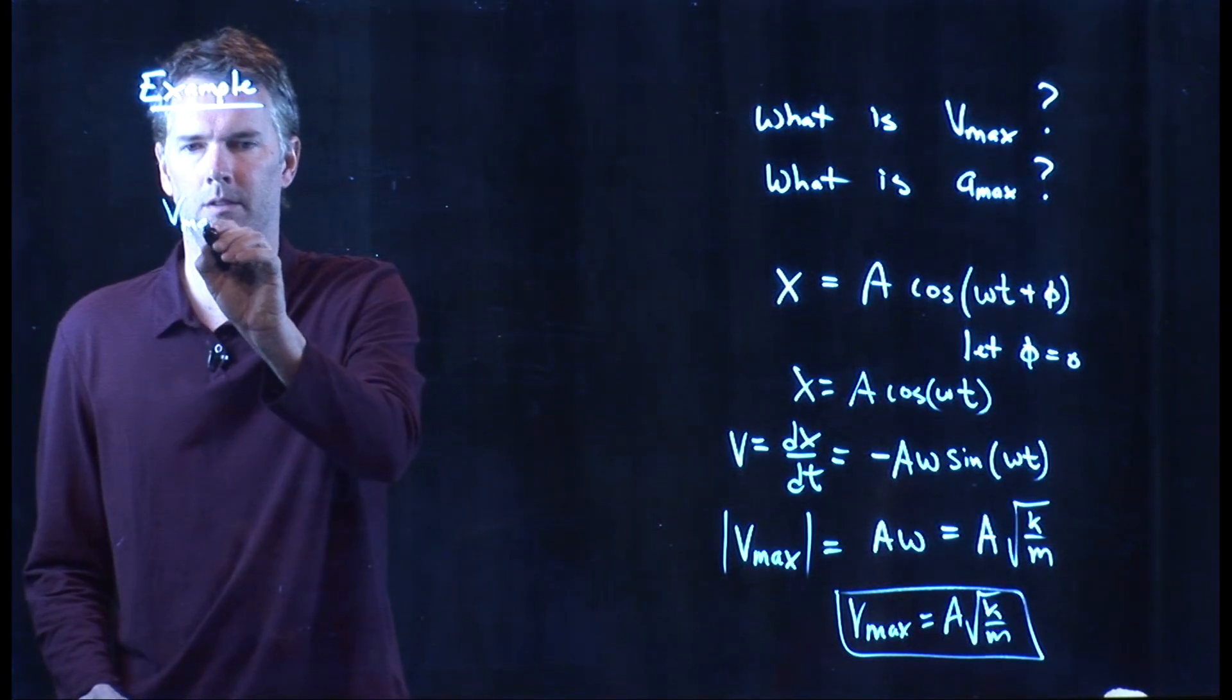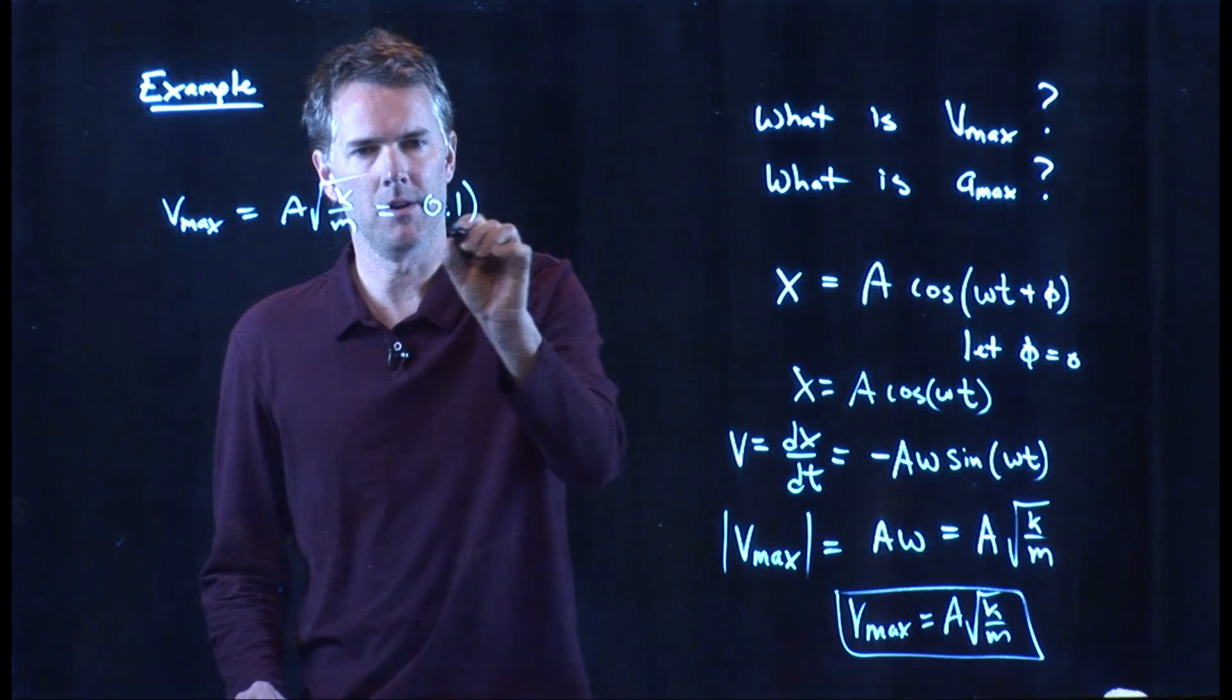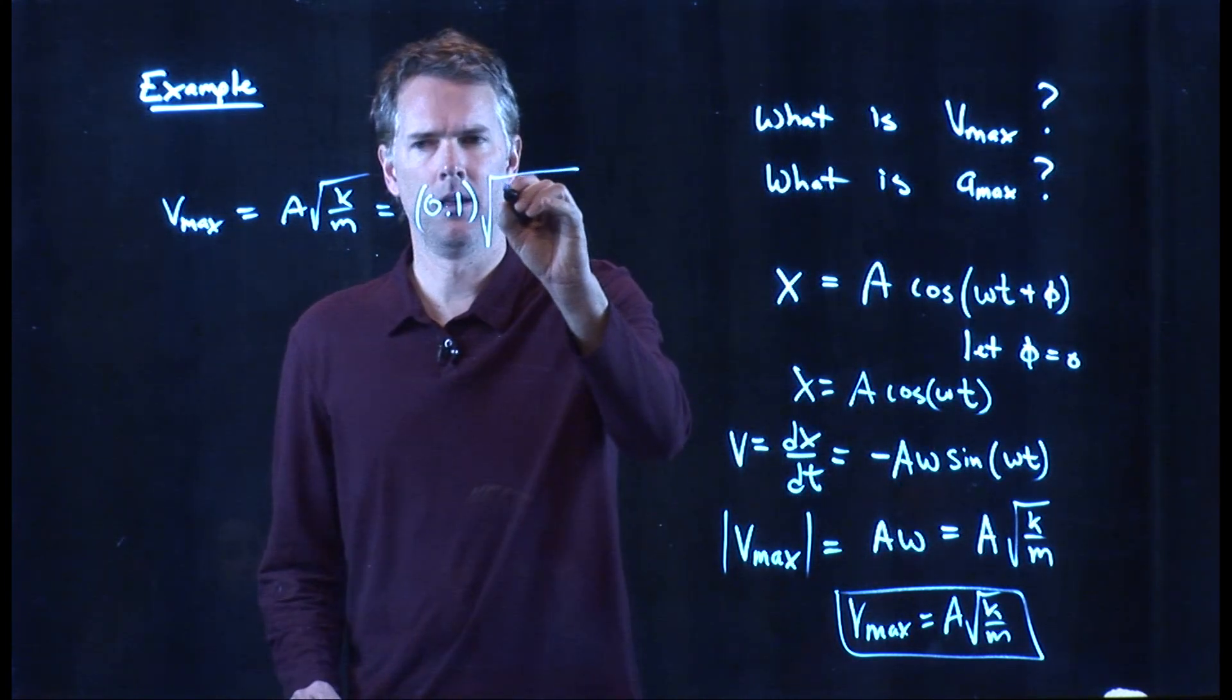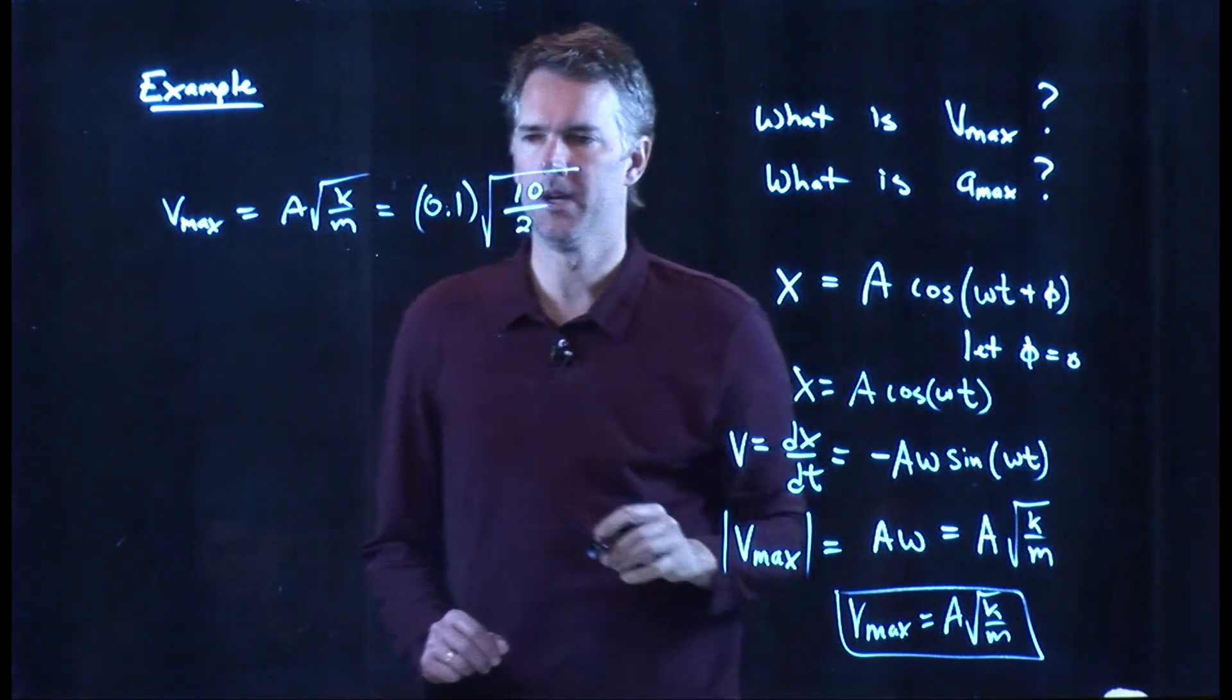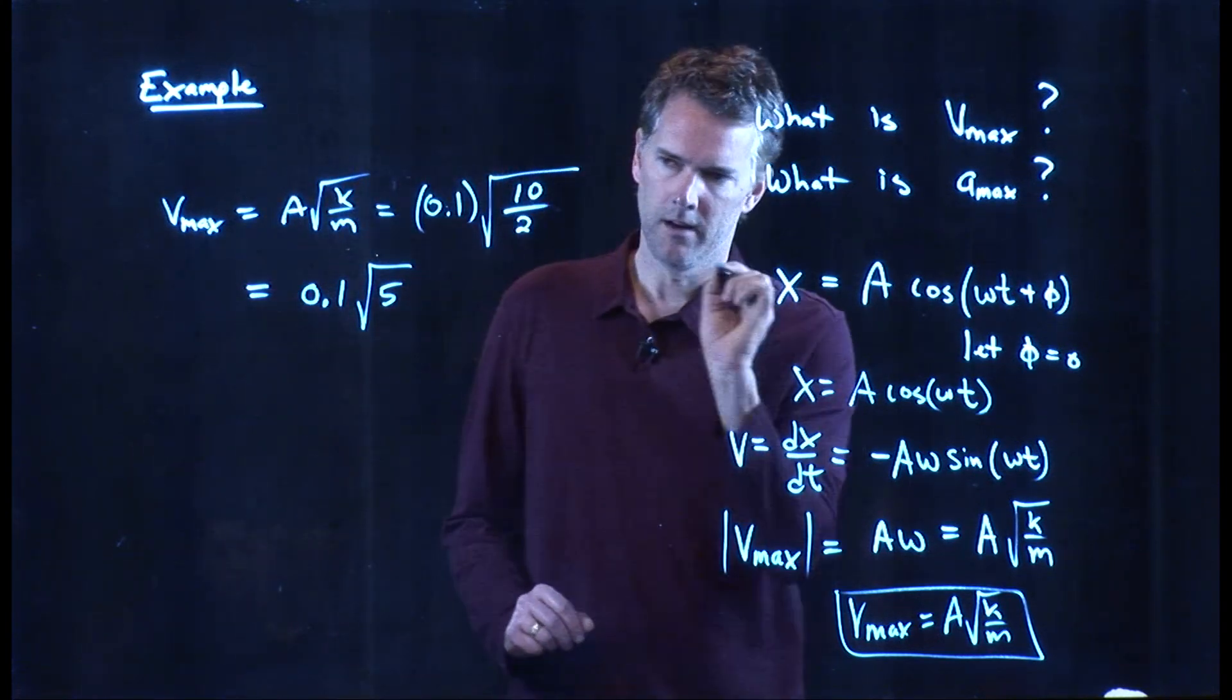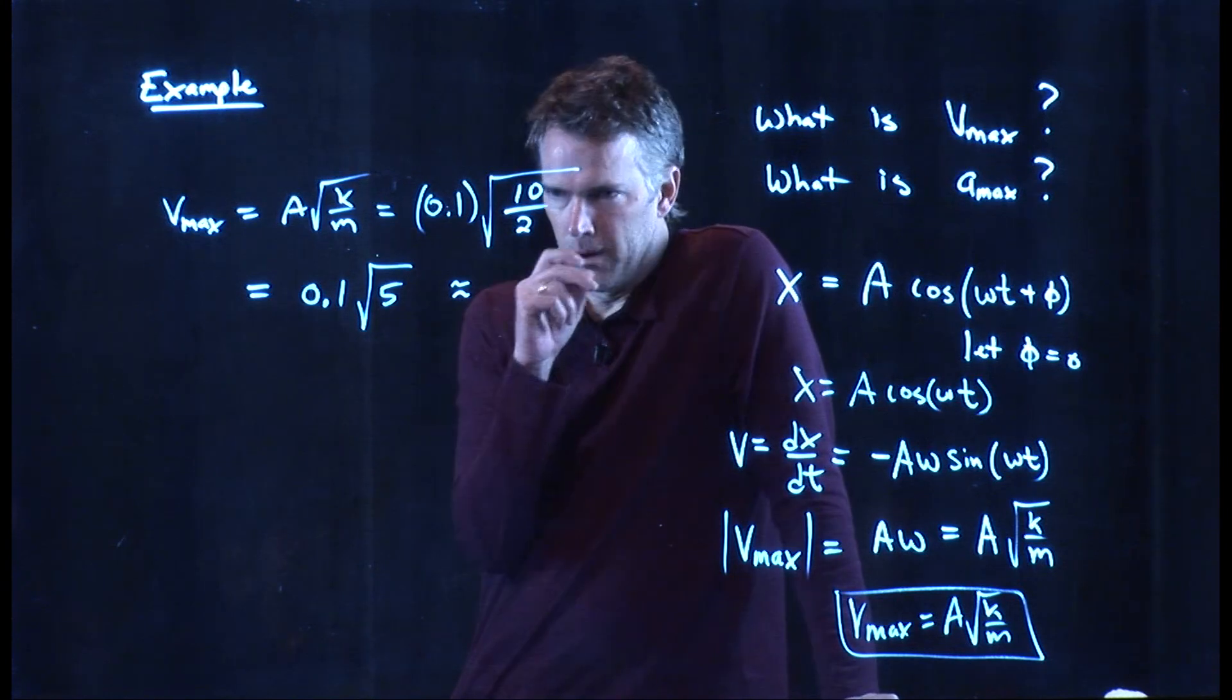Okay. V max is A square root k over m. What did we say A was? 10 centimeters, right? SI units, that's 0.1. What was our k? Anybody remember? What do we have for our k? Is it 10? Yeah. 10 newtons per meter. We had a mass of 2 kilograms. And so, now you can punch this in and see what you get. 0.1 times the square root of 5. If one of you punched that into your calculator, tell me what you get. And we'll approximate it right here. What's the square root of 5? Well, the square root of 4 is 2.